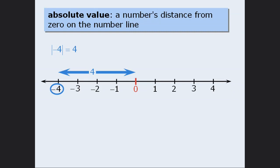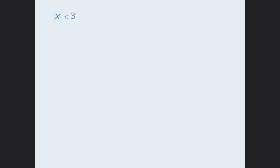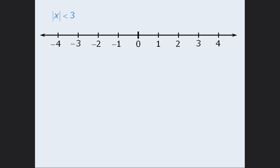We can now apply this concept to help us solve inequalities involving absolute values. Here, we are told that the absolute value of x is less than 3. In other words, x is less than 3 units away from 0 on the number line. So, to solve this inequality, we must find all values of x that are less than 3 units away from 0 on the number line.